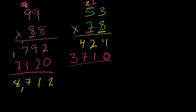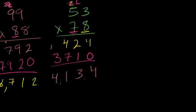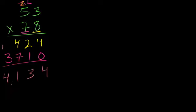Now we're ready to add. 4 plus 0 is 4, 2 plus 1 is 3, 4 plus 7 is 11, carry the 1. 1 plus 3 is 4. 4,134. Let's up the stakes a little bit.